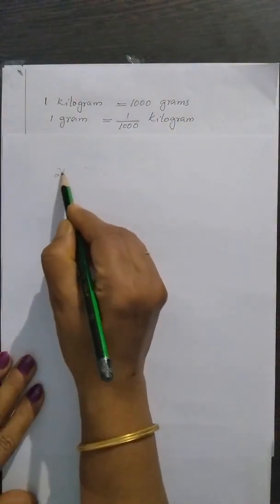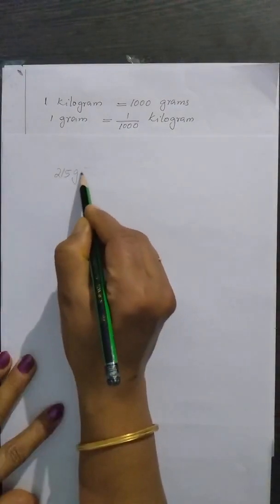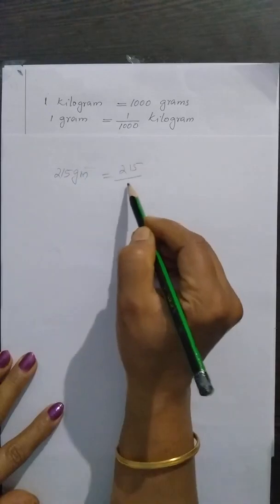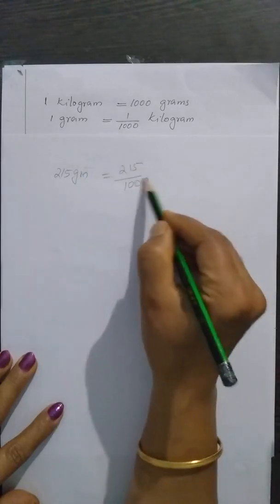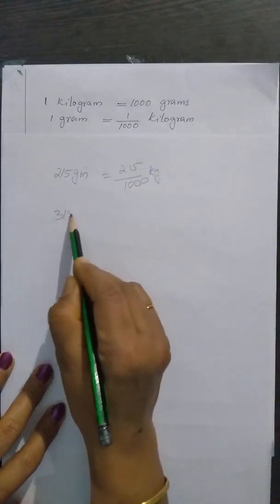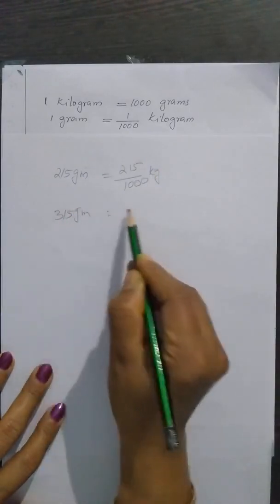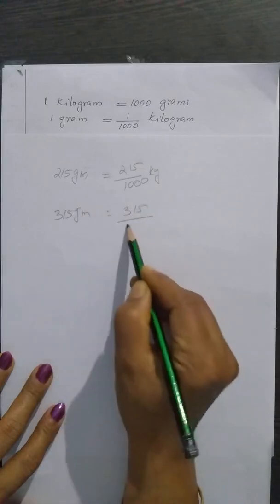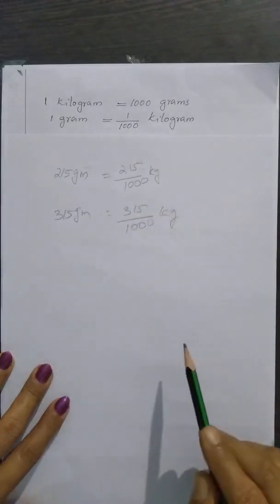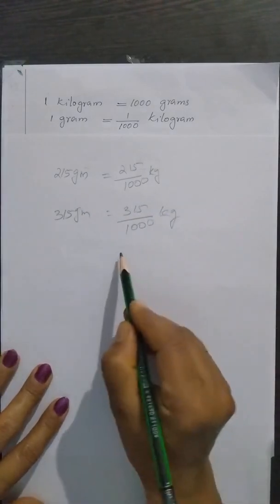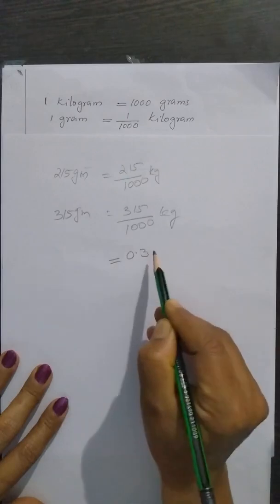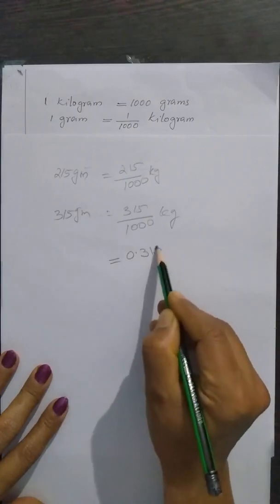216 grams is equal to 216 divided by 1000 kilogram. 315 grams is equal to 315 divided by 1000 kilogram, which is equal to 0.315 kilogram.